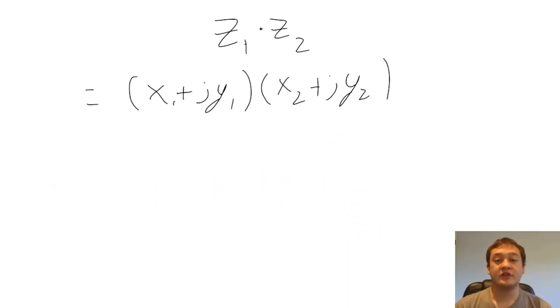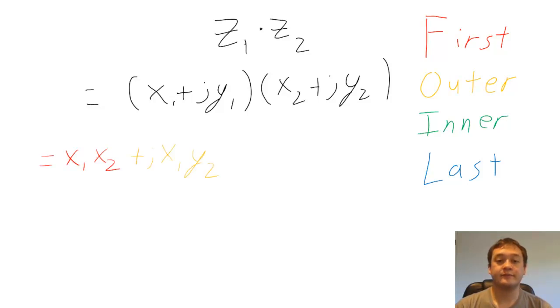Multiplication of two complex numbers in Cartesian coordinates can be completed by using the FOIL method. We multiply the first terms together, then add that to the outer terms, then add those to the inner terms, and add those to the last terms.